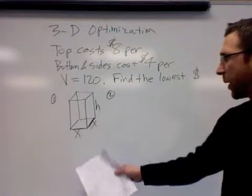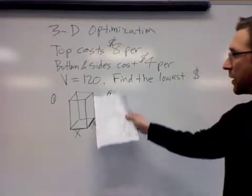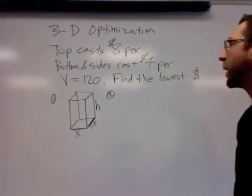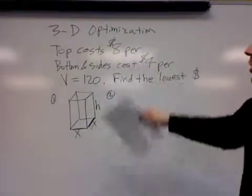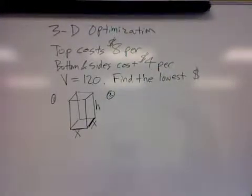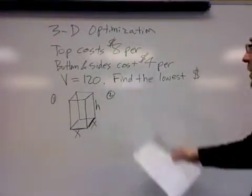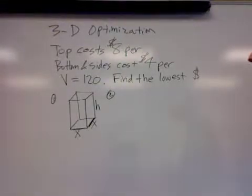The question says it's a square-based box and the volume must be 120 cubic inches. The top costs $8 per square inch and the bottom and sides cost $4 per square inch, and we're looking to minimize the cost.